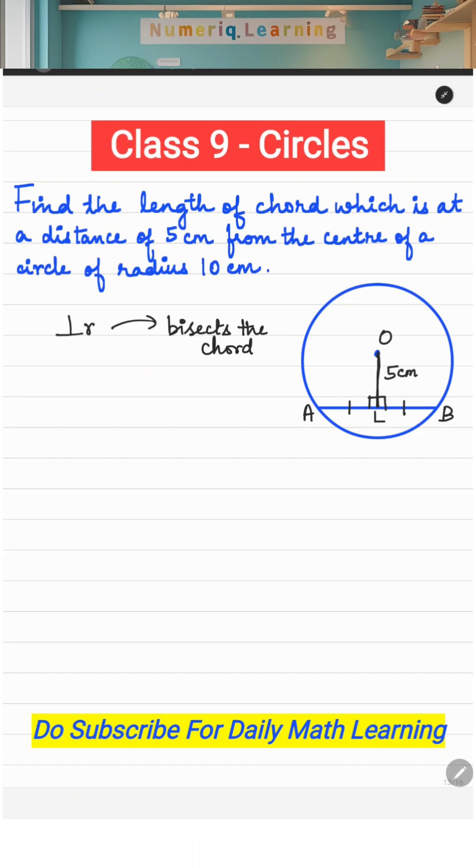And you are also given radius 10 centimeters, so this OA is the radius. This is your 10 centimeters. Now using Pythagoras theorem, in triangle OAL, hypotenuse square: OA² equals AL² plus OL².